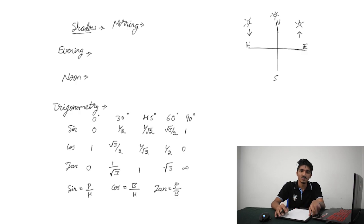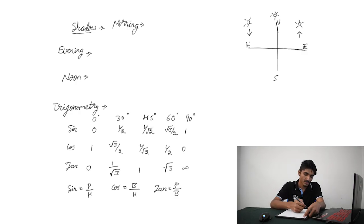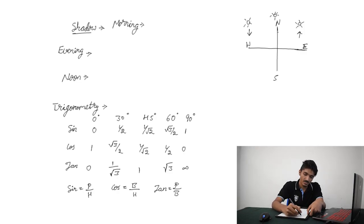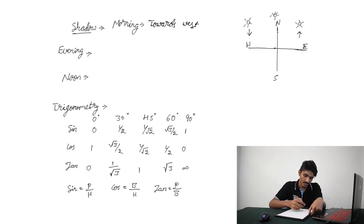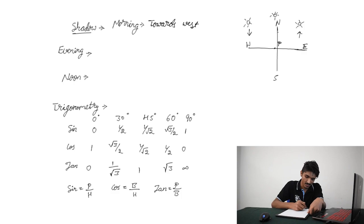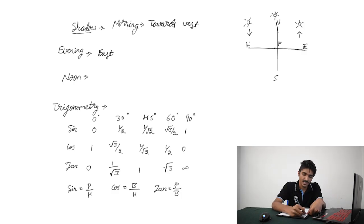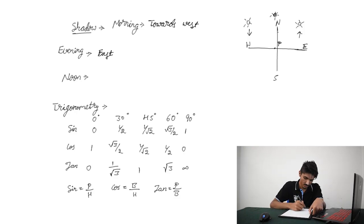One more thing you must know before solving questions on Directional Sense is shadows. In the morning, since the sun rises in the East, if you stand at a point P, your shadow will be towards West. And in the evening, as the sun sets in the West, if you stand at a point P, your shadow will be towards East. And at noon, that is 12 o'clock, the sun will be exactly above your head, so there will be no shadow during noon.